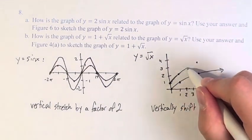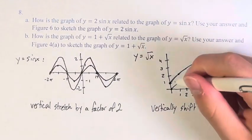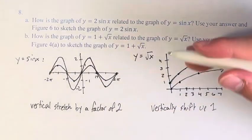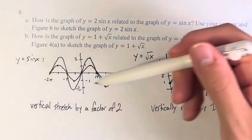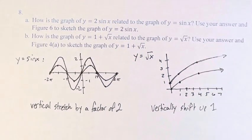We can see that this graph is sort of parallel to the original, if curves could be parallel. It's just shifted up one unit. So these are how you find the graphs of y equals 2 sine of x and y equals 1 plus the square root of x from the original graphs.